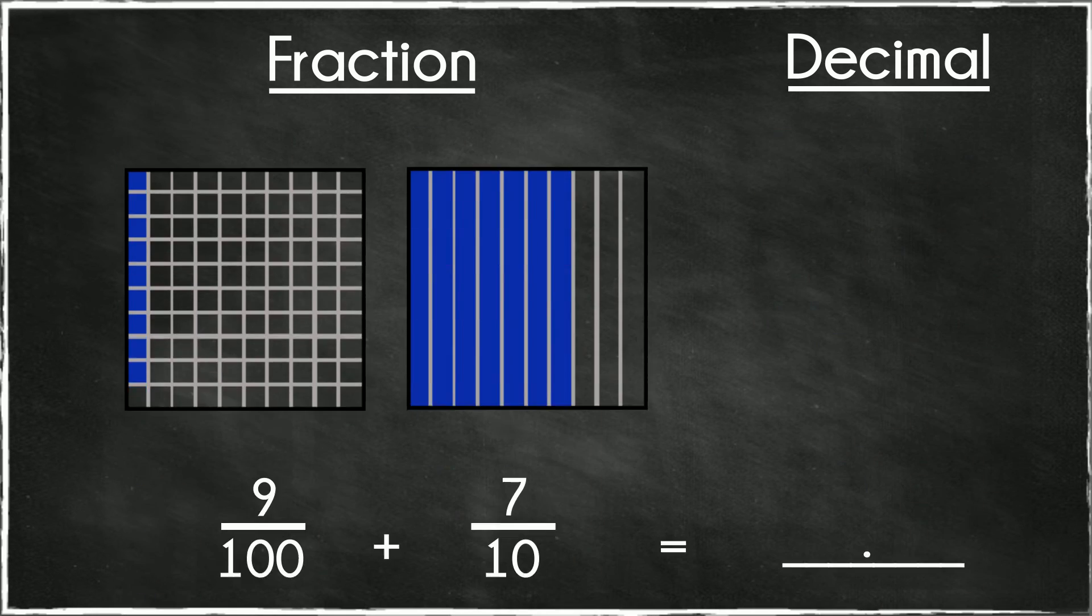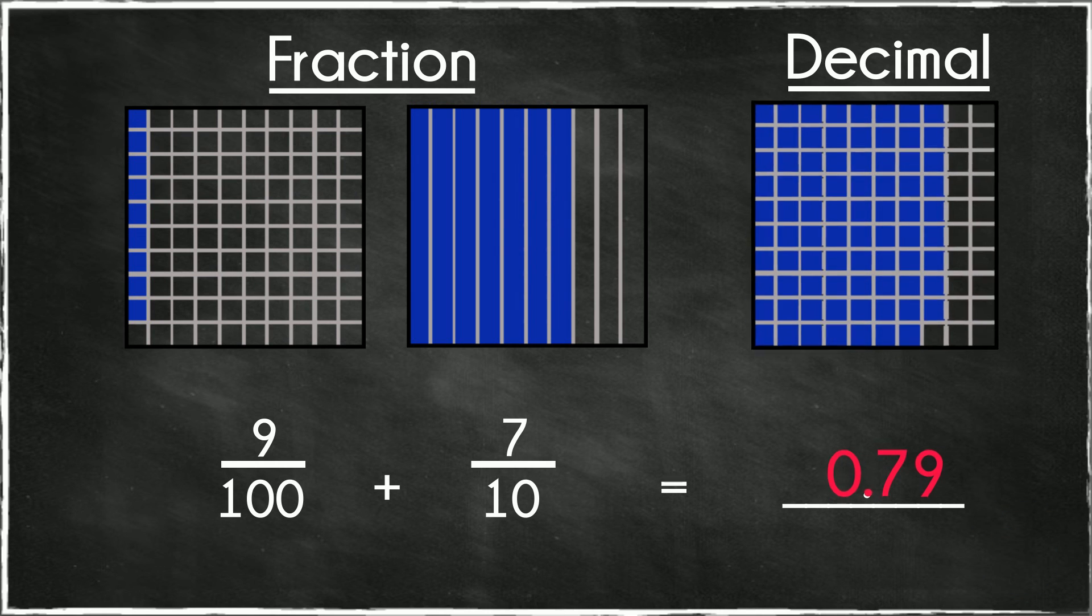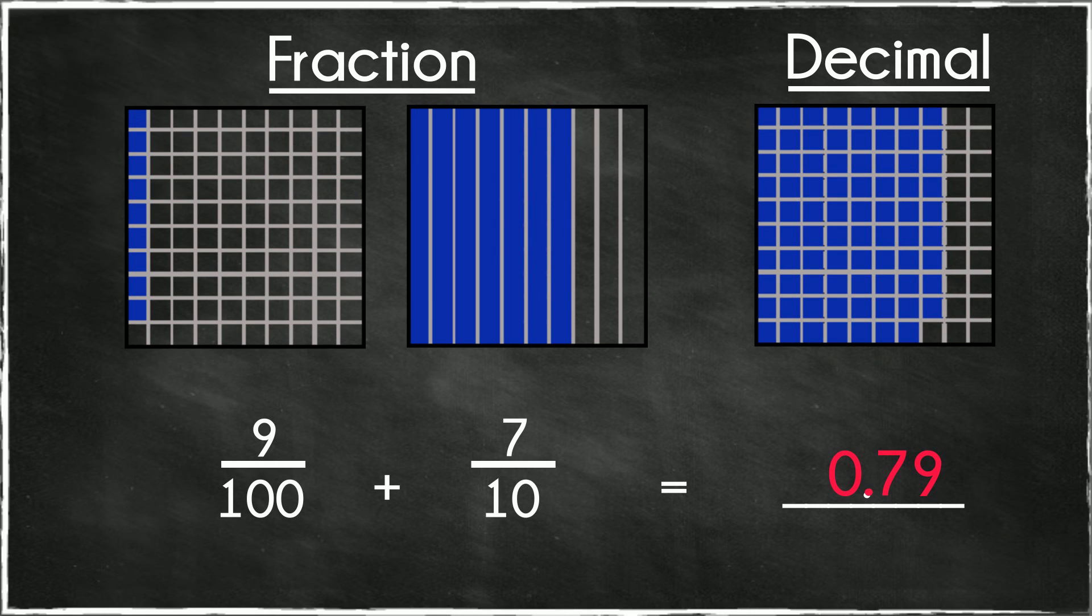One more. 9 hundredths plus 7 tenths. Show this as a decimal, and be careful with this one. Pause here. The answer is 79 hundredths, 0.79.